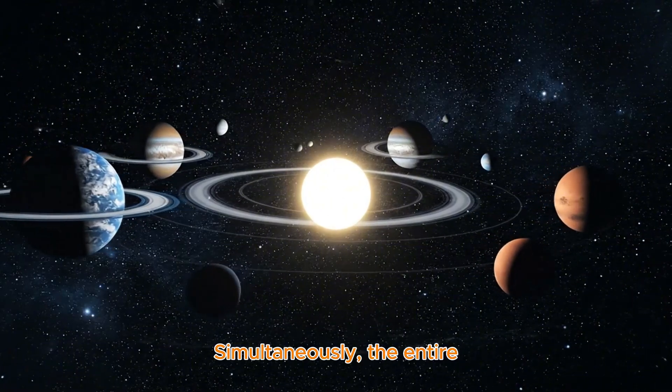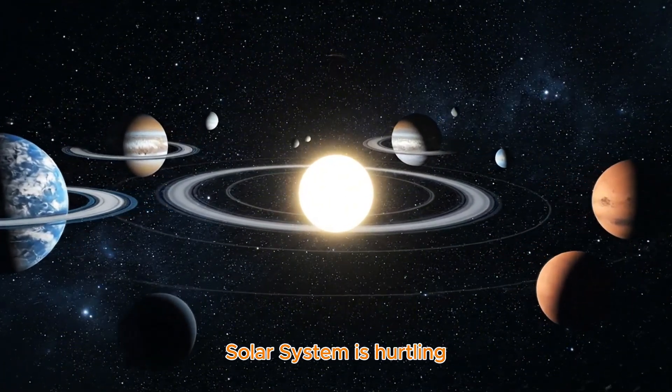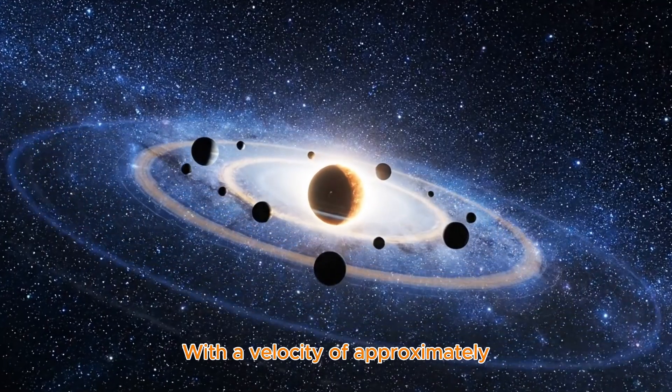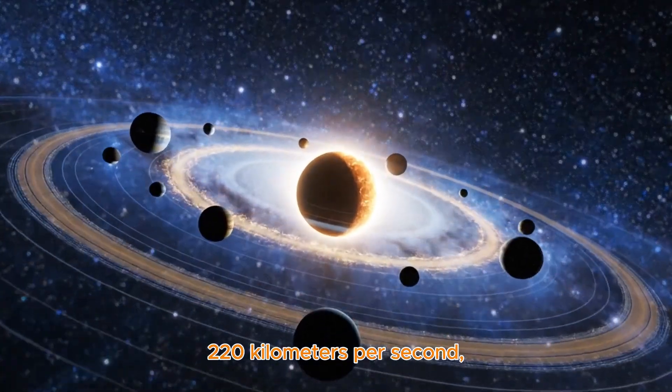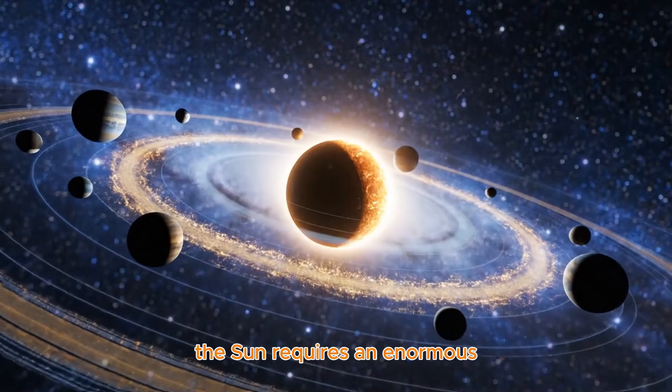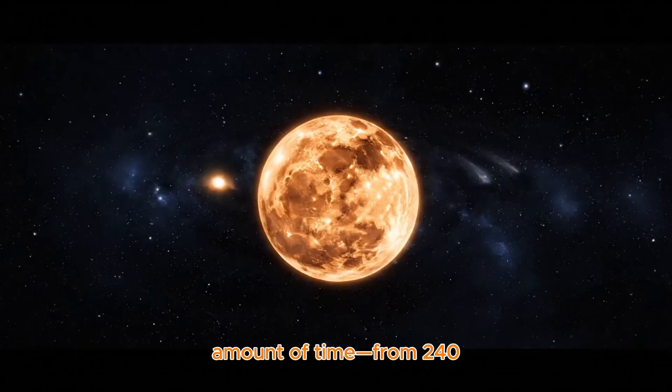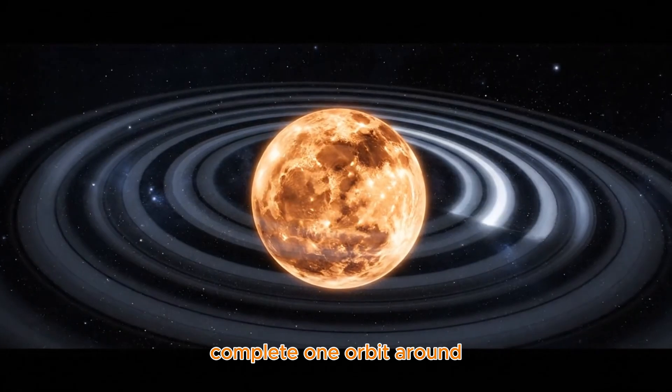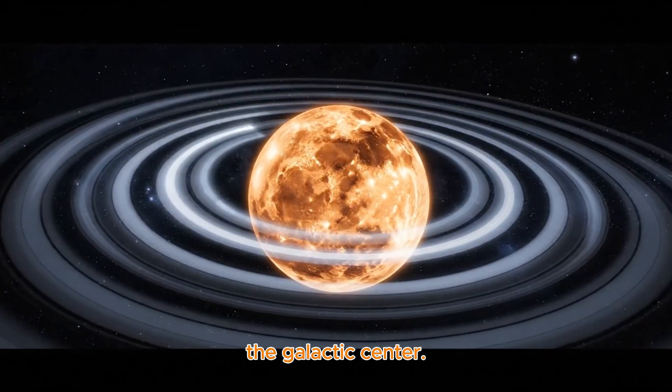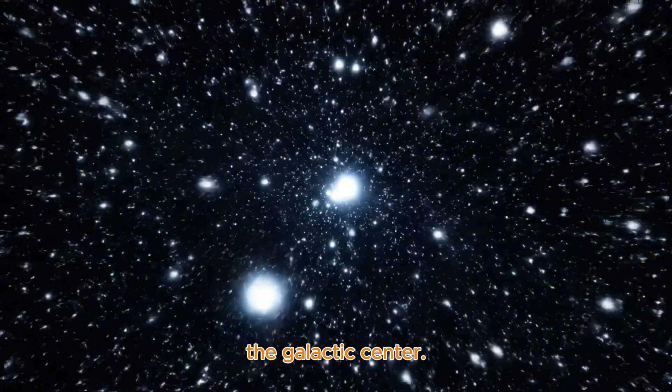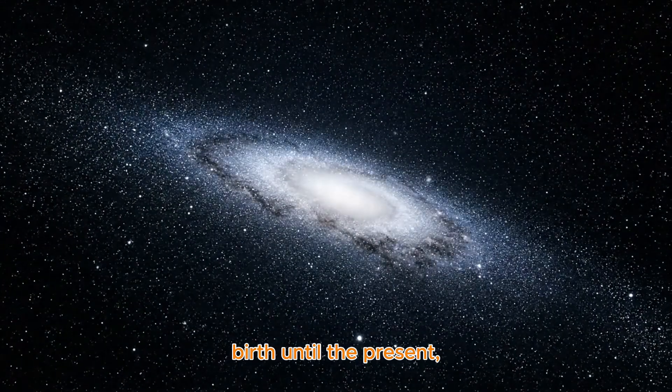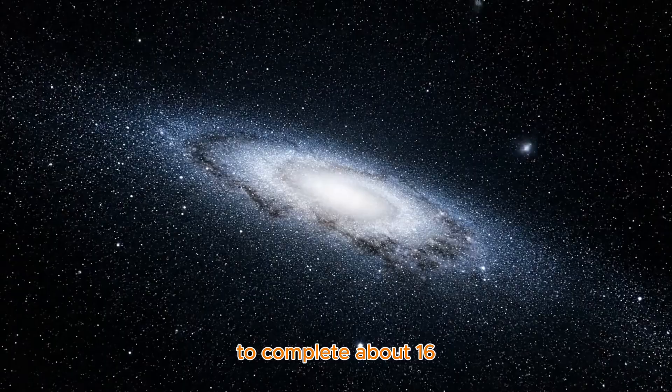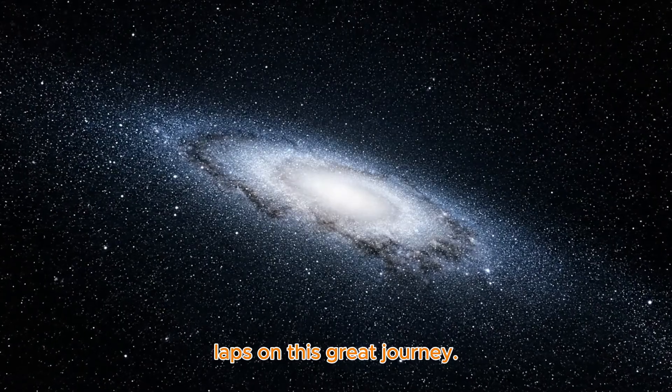Simultaneously, the entire solar system is hurtling through galactic space with a velocity of approximately 220 kilometers per second. The Sun requires an enormous amount of time, from 240 to 280 million years, to complete one orbit around the galactic center. Calculating from its birth until the present, our star has only managed to complete about 16 laps on this great journey.